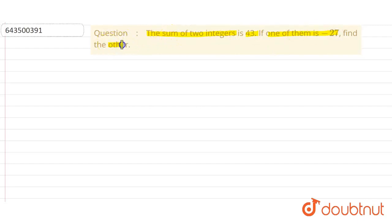So let's find it out. The sum of two integers, just suppose x plus y is equal to 43. They gave us one integer is minus 27. Let's substitute minus 27 instead of x. I'll write minus 27 plus y is equal to 43.